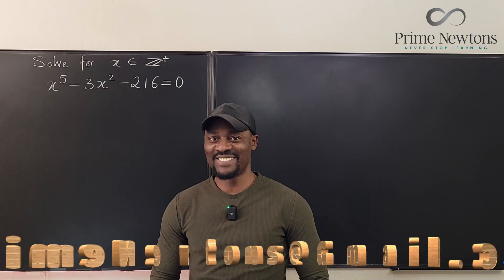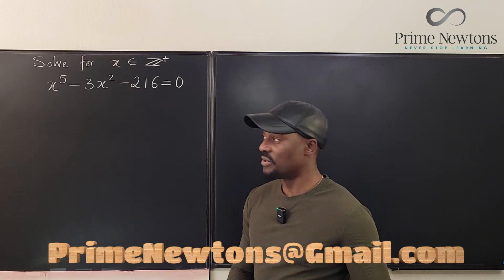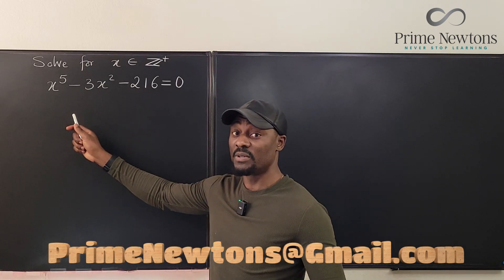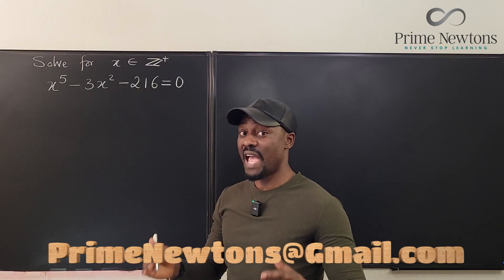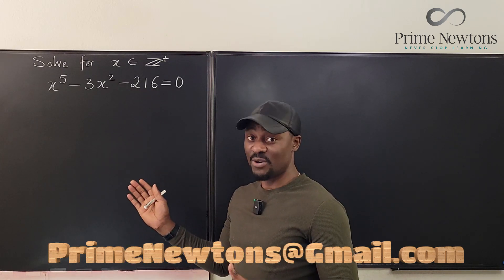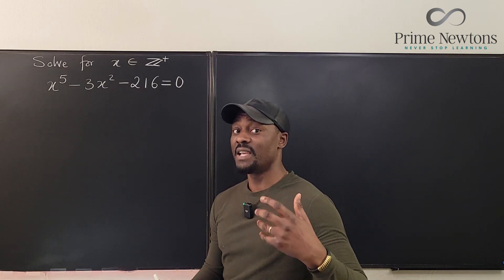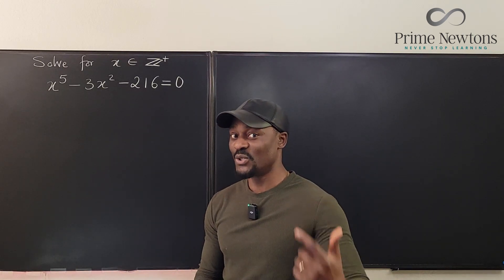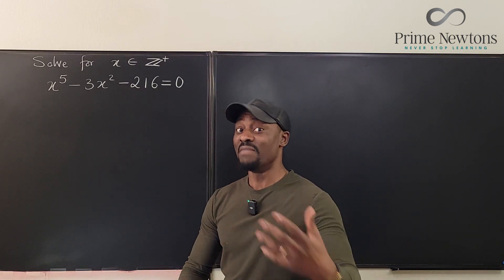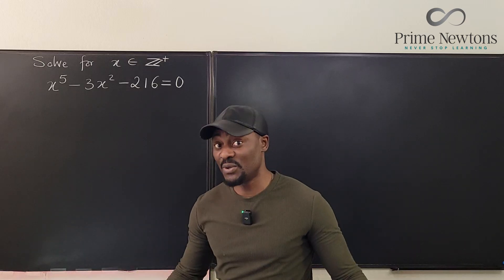Welcome to another video. Here I have a polynomial equation, a fifth degree polynomial, and I'm supposed to find all integer values of x that satisfy the equation. This is what you call a Diophantine equation - anytime you're only interested in the integer solutions, it's usually much easier than if you were interested in all kinds of solutions including the complex solutions.